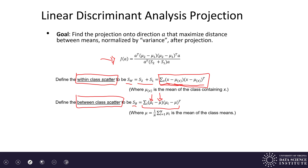What we really want to do is minimize within-class scatter and maximize between-class scatter. Even if you didn't follow every formula, that's a good understanding of what linear discriminant analysis projection does: maximize between-class scatter and minimize within-class scatter.